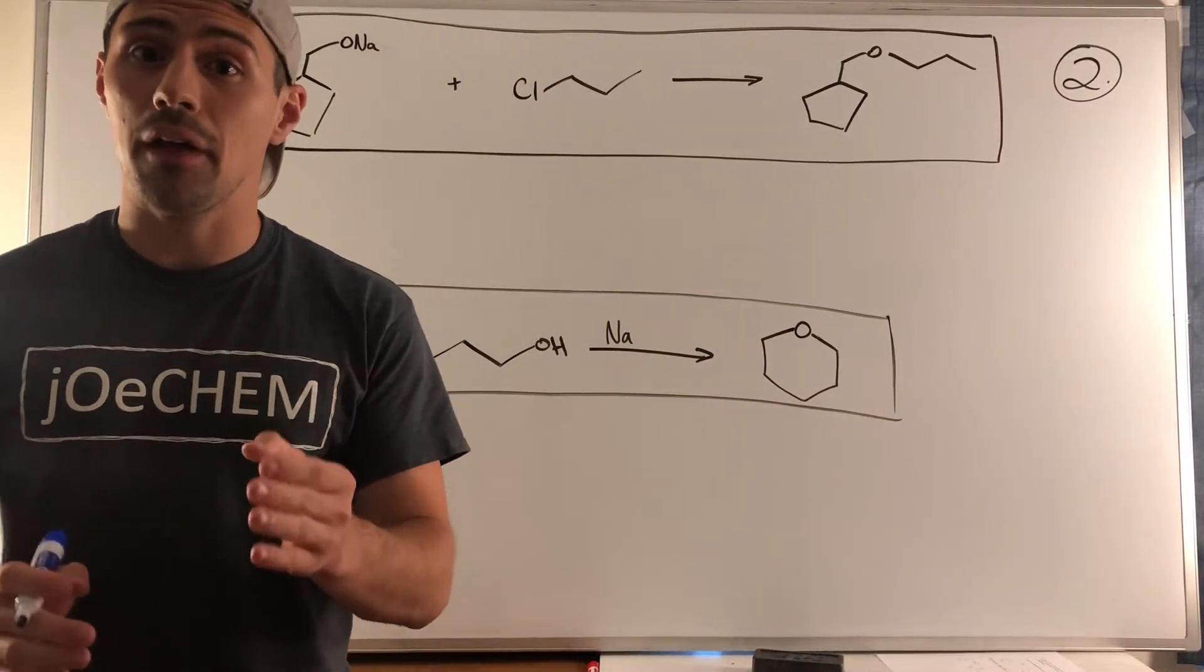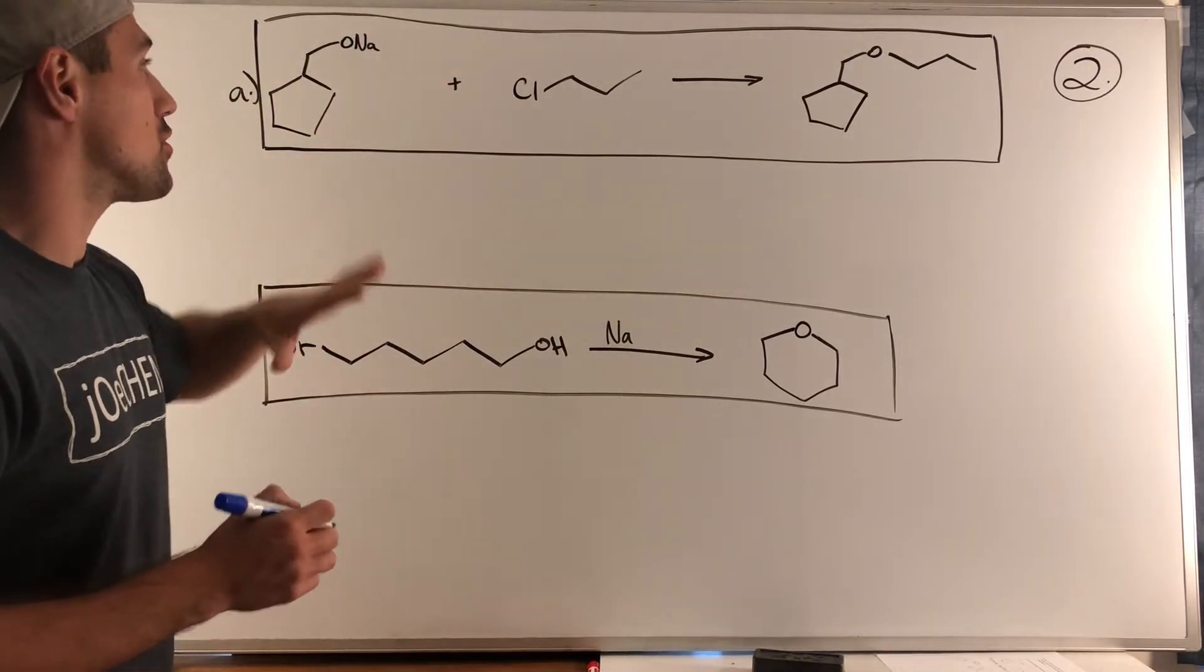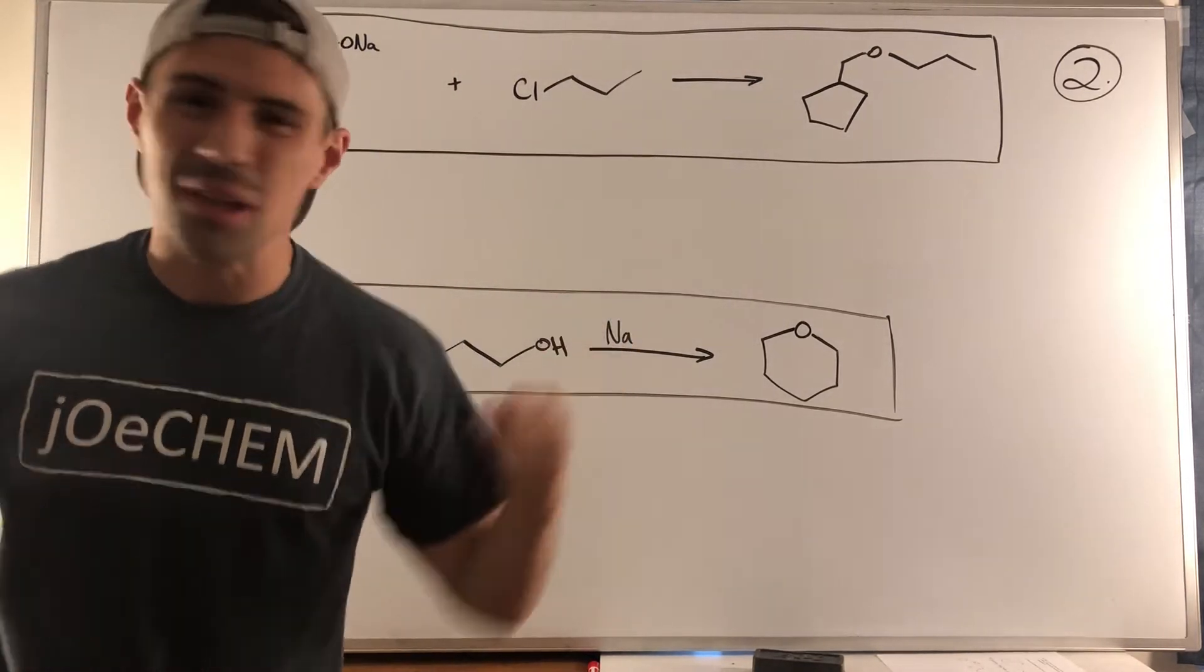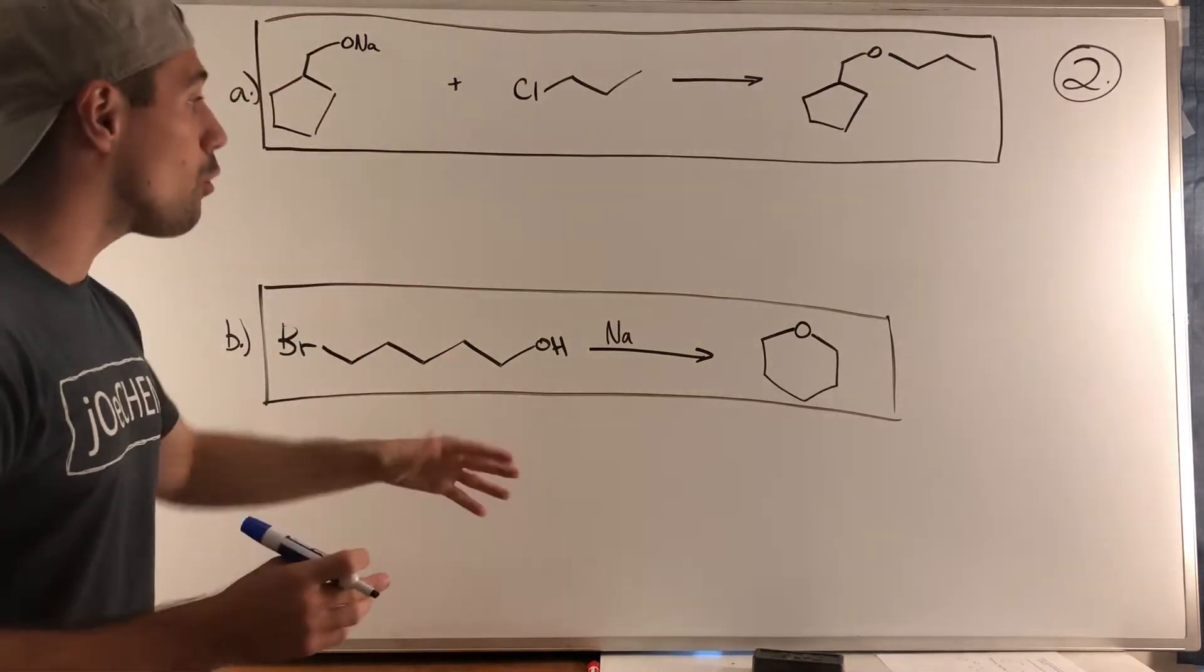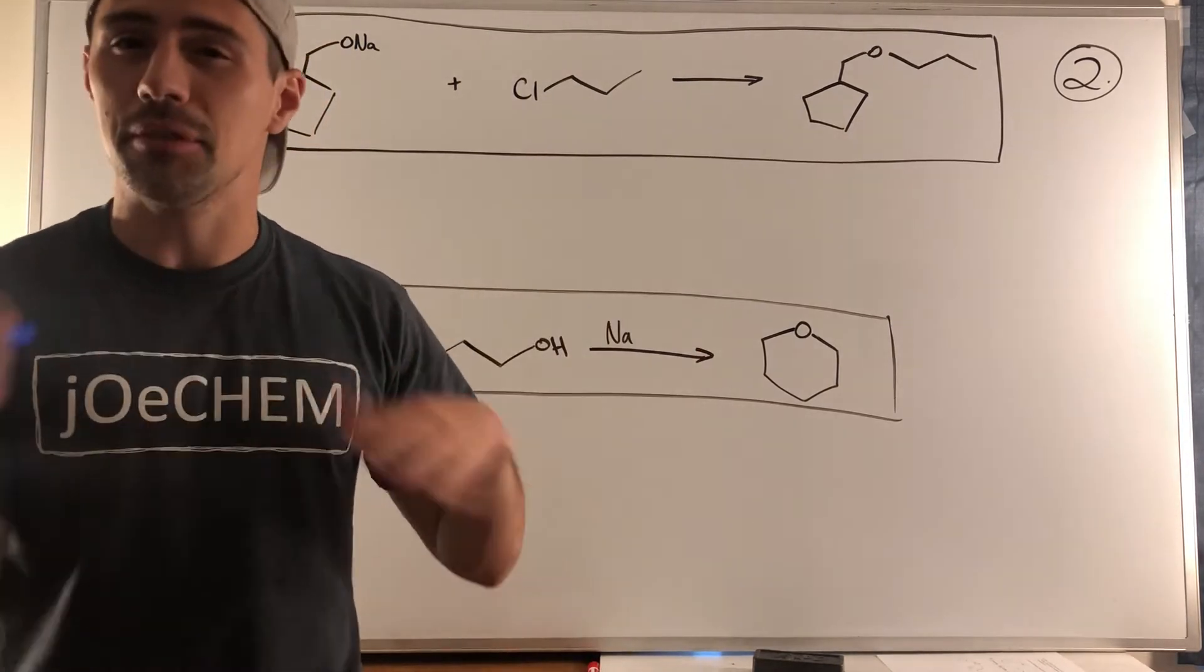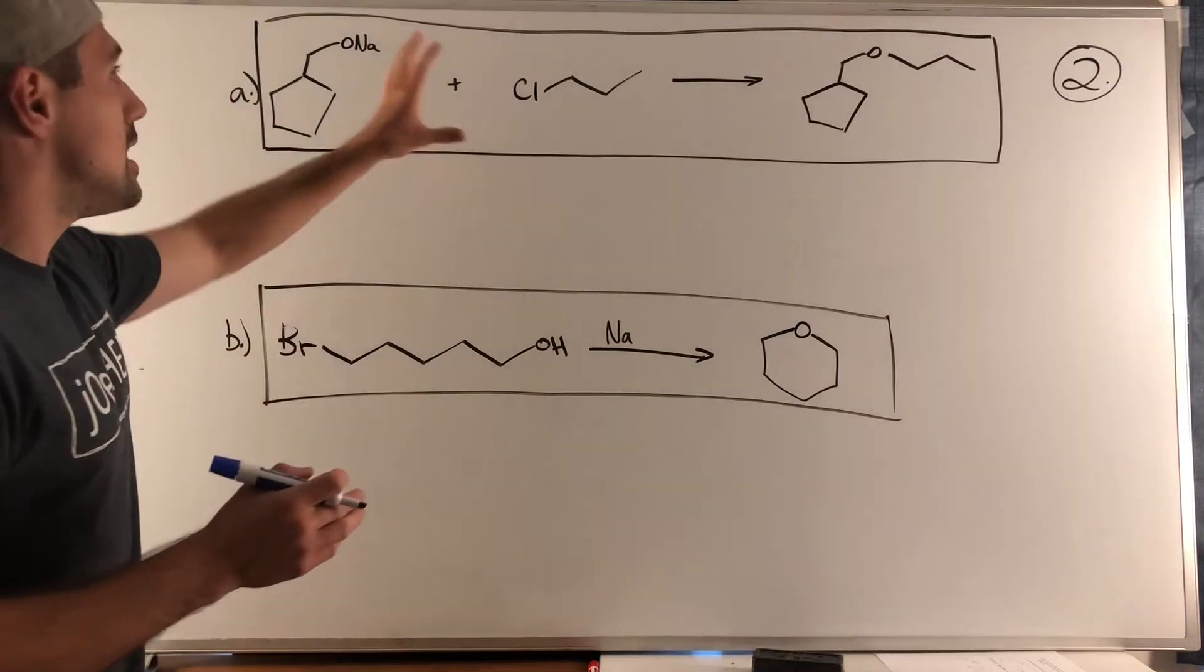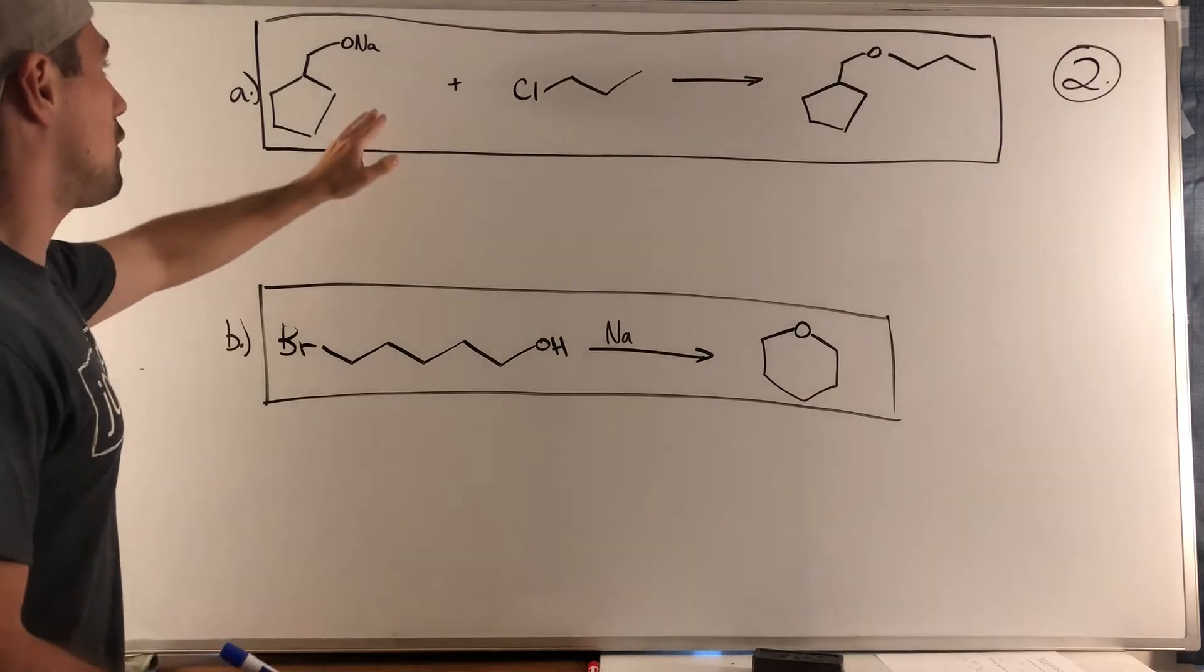Okay gang, to round out this pretty short worksheet, we have an A and B on problem two. We have to draw the mechanisms for A and B, and then as a bonus—because we always love to do extra in organic chemistry—we are told that B is a better, more favorable reaction, and we need to explain why. I know they're not exactly the same, but they're like roughly the same, and there's one key difference.